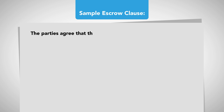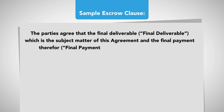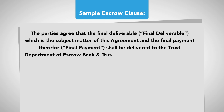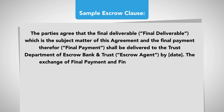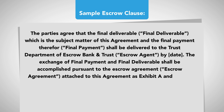Sample Escrow Clause. The parties agree that the final deliverable, which is the subject matter of this agreement, and the final payment therefore, shall be delivered to the Trust Department of Escrow Bank and Trust, escrow agent, by date. The exchange of final payment and final deliverable shall be accomplished pursuant to the escrow agreement, attached to this agreement as Exhibit A, and hereby made a part hereof for all purposes.